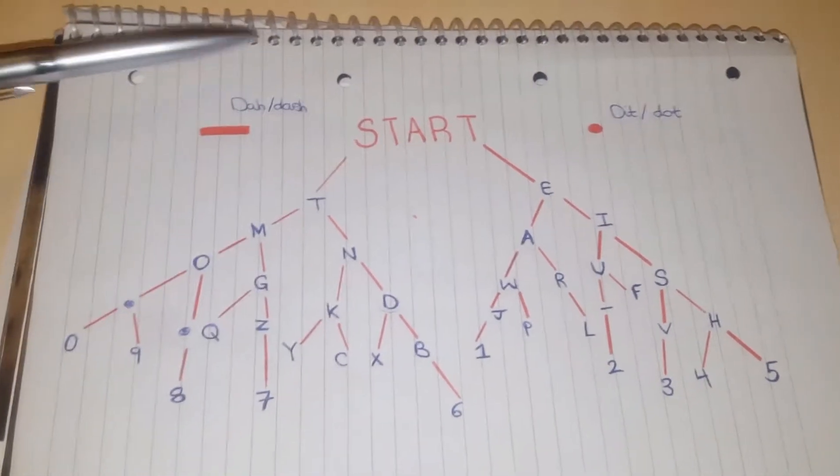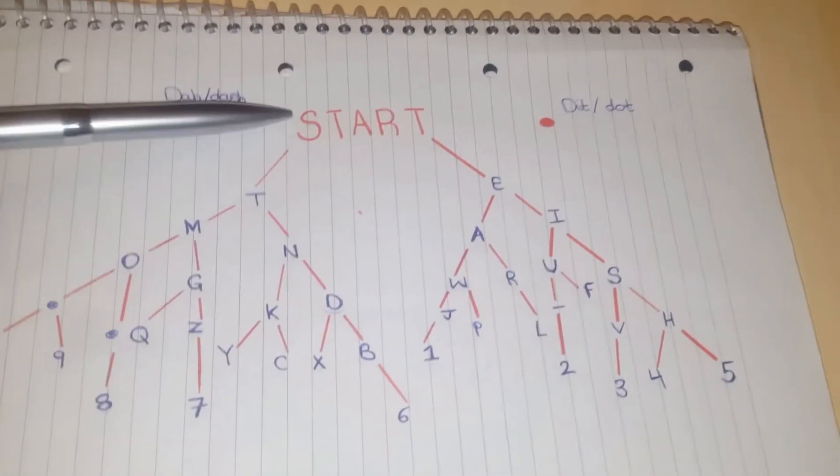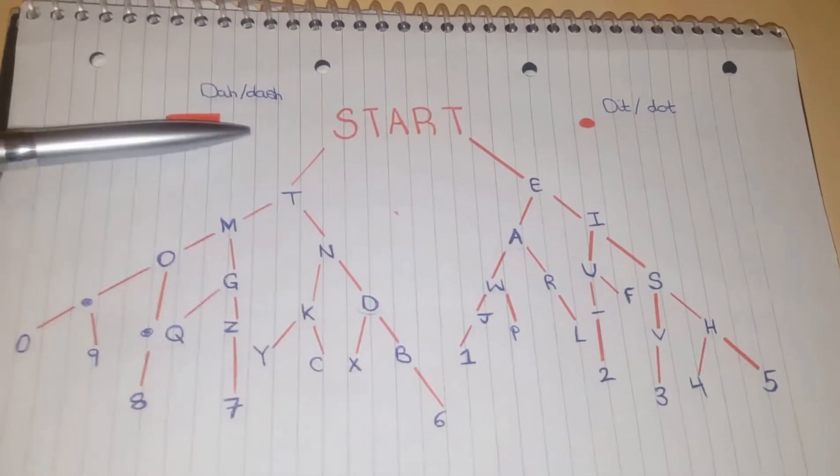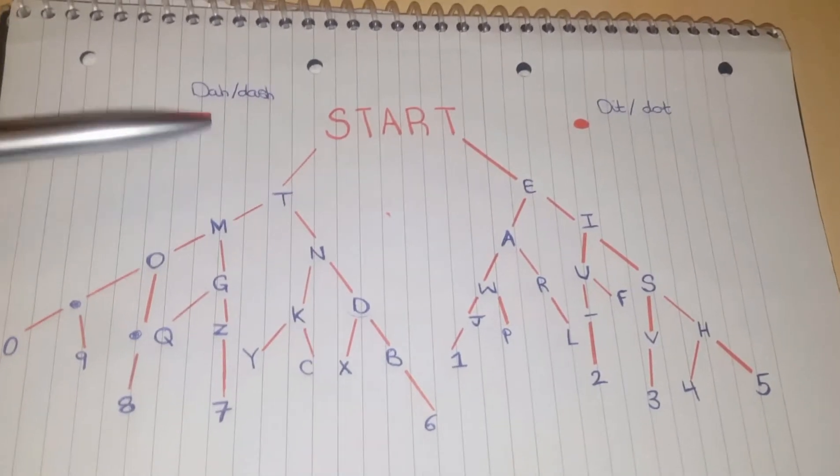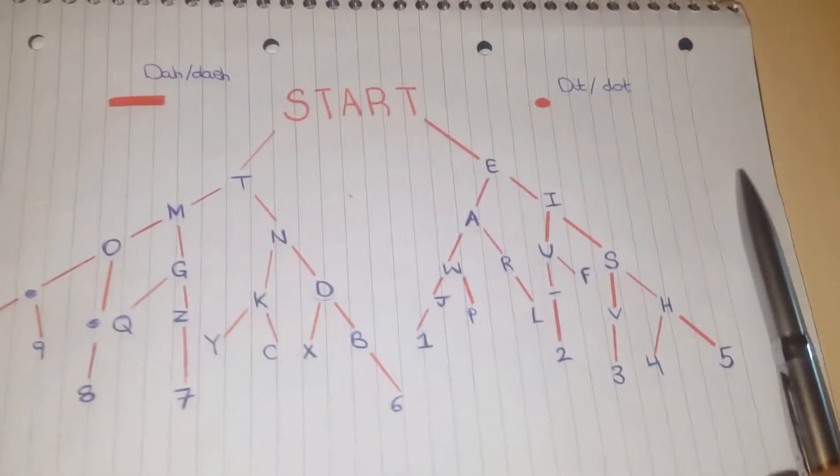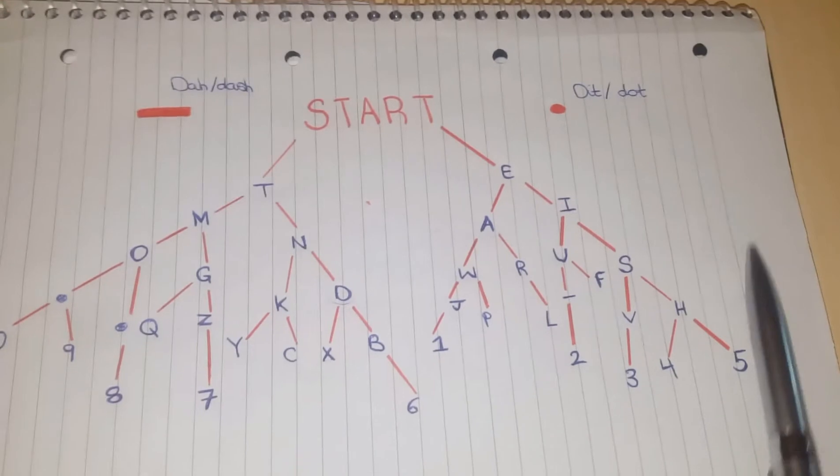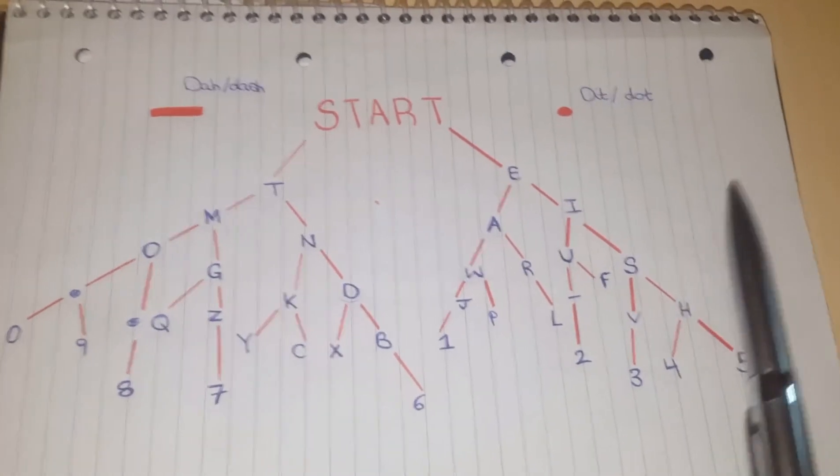So, for the left hand side, you start off with the dashes, for every opposite movement that you make, you turn into a dot. And on the right, you start off with a dot, for every opposite direction you make, you turn into a dash.